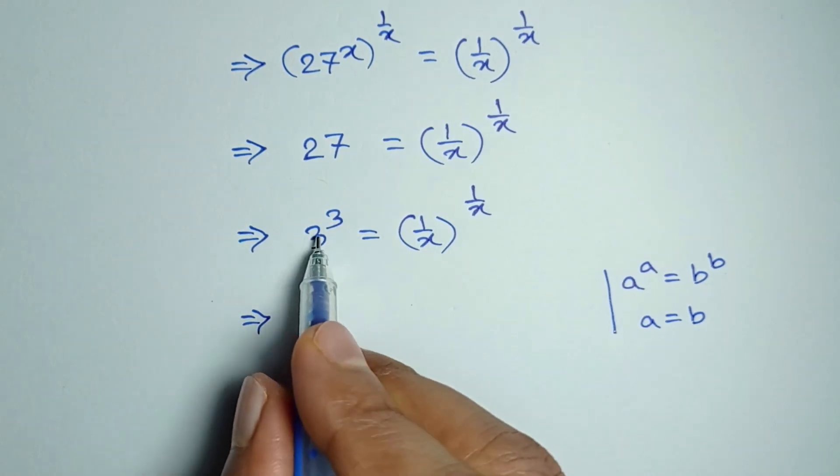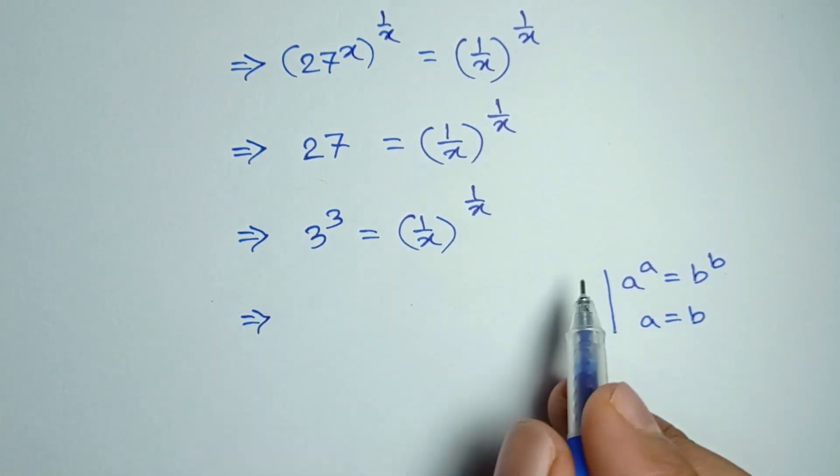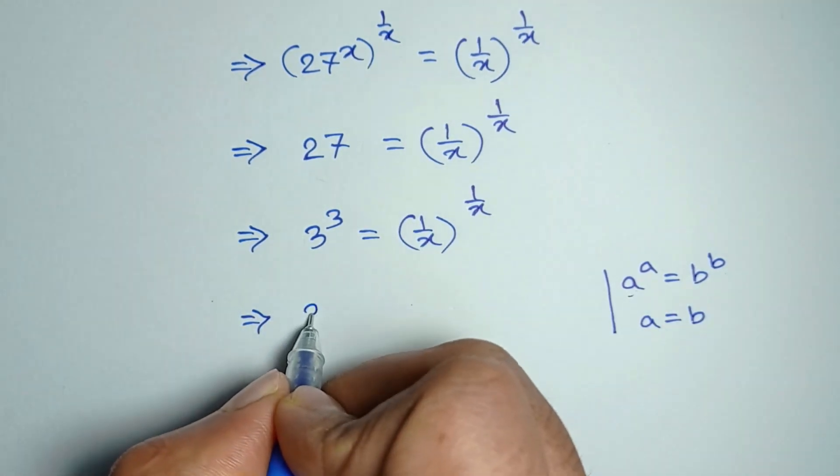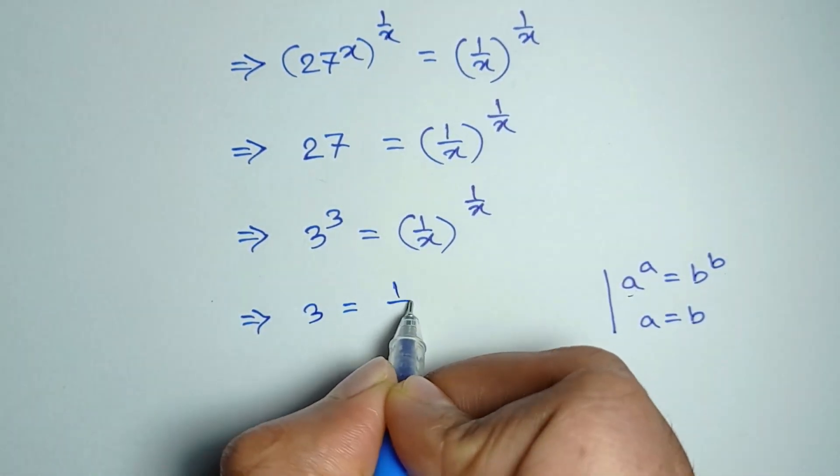So from here, 3 is equal to a and 1 by x is equal to b. So we can write 3 is equal to 1 divided by x.